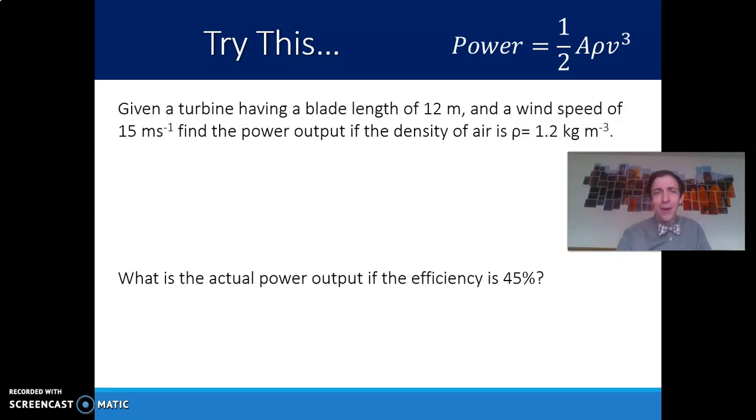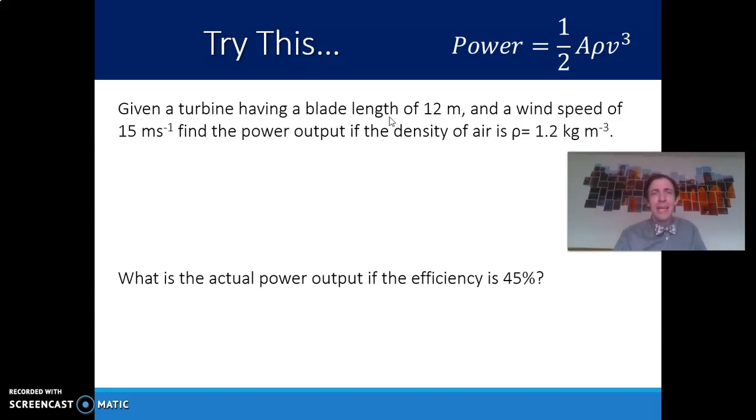This can be calculated out as well. So given the turbine having a blade length of 12 meters and a wind speed of 15 meters per second, I'd like you to find the power output if the density of air is 1.2 kilograms per cubic meter. Go ahead, grab a piece of paper, and try to calculate this out for yourself before I show you the answer.